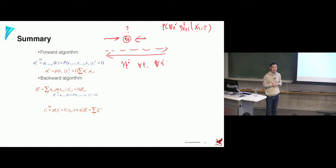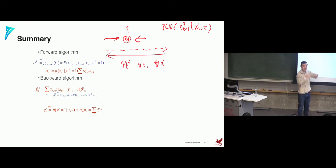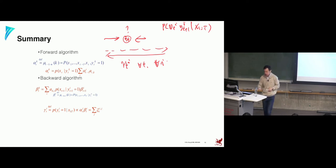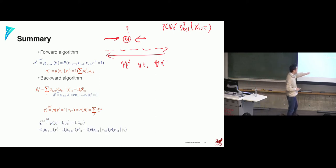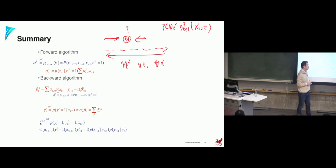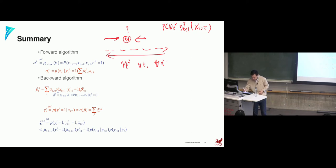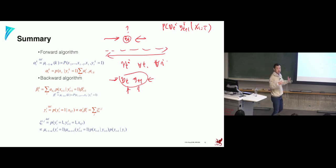A trickier question: what if you want the joint posterior of Y_t=i and Y_{t+1}=j given the whole sequence? You can't just multiply two gamma terms — that assumes independence, but the states are dependent. You need a slightly more involved version: it's still message passing but with more terms. Roughly, you collect messages coming into both Y_t and Y_{t+1} from all directions and normalize them. That's the rough idea behind the pairwise posterior formula.